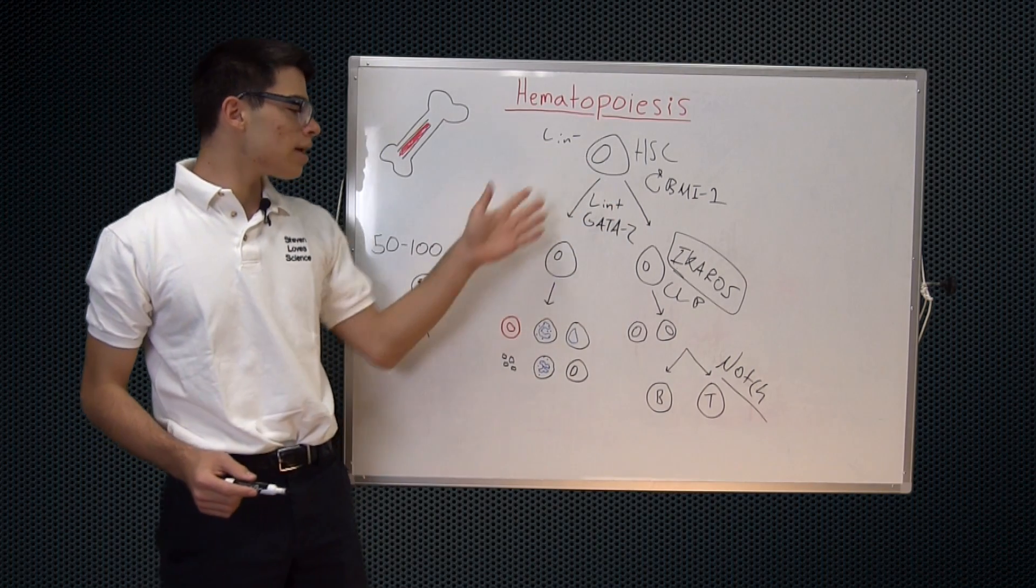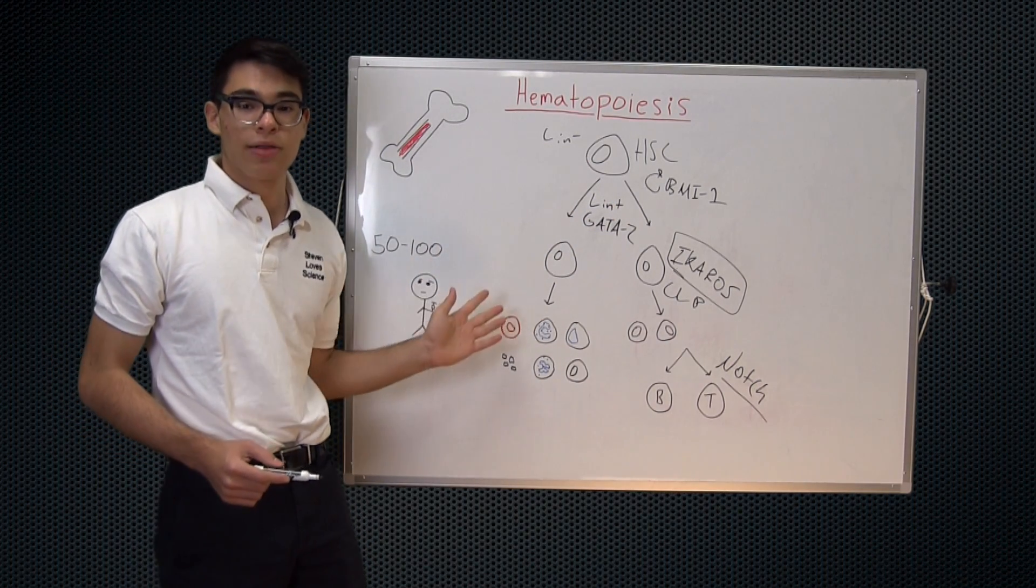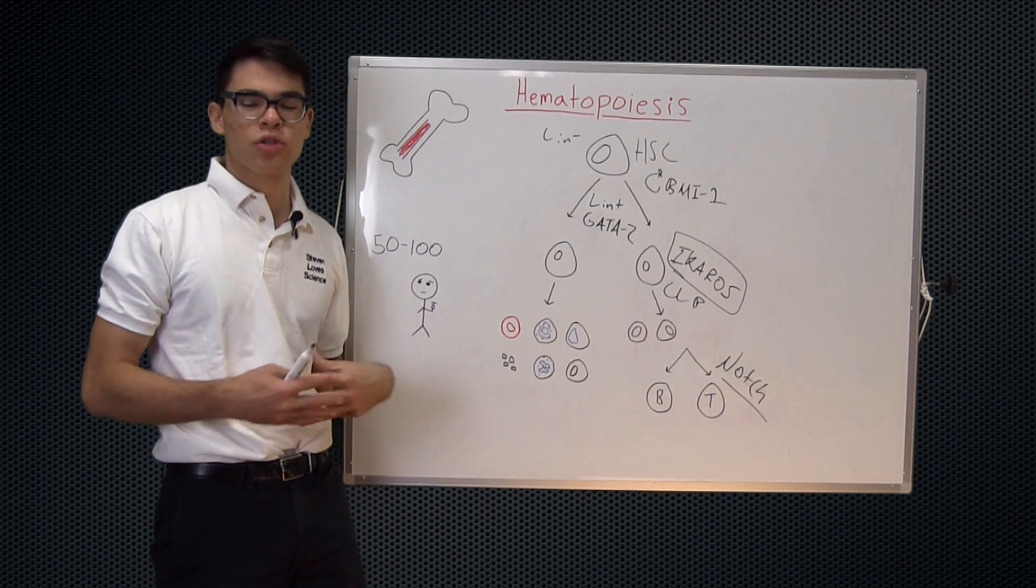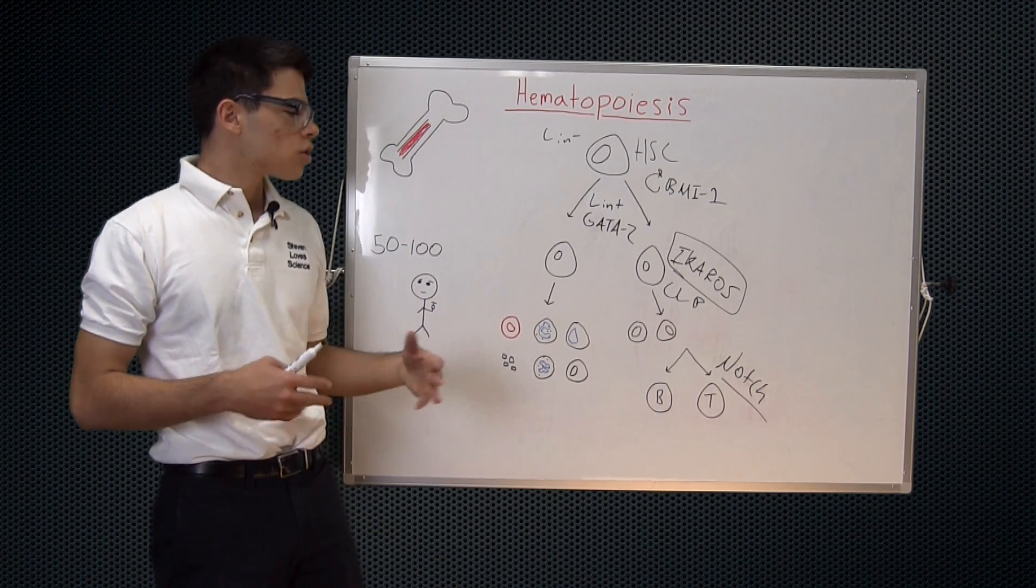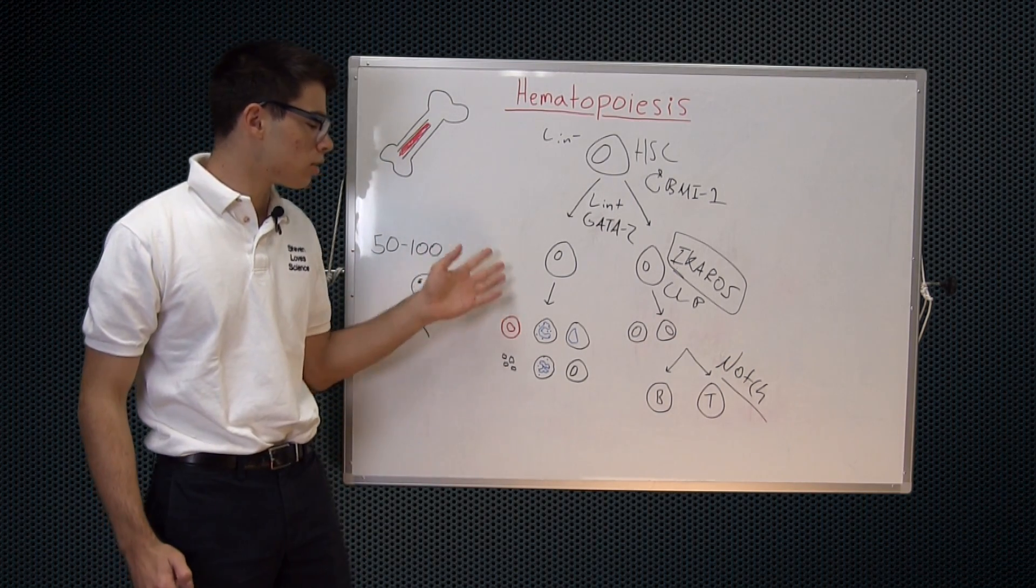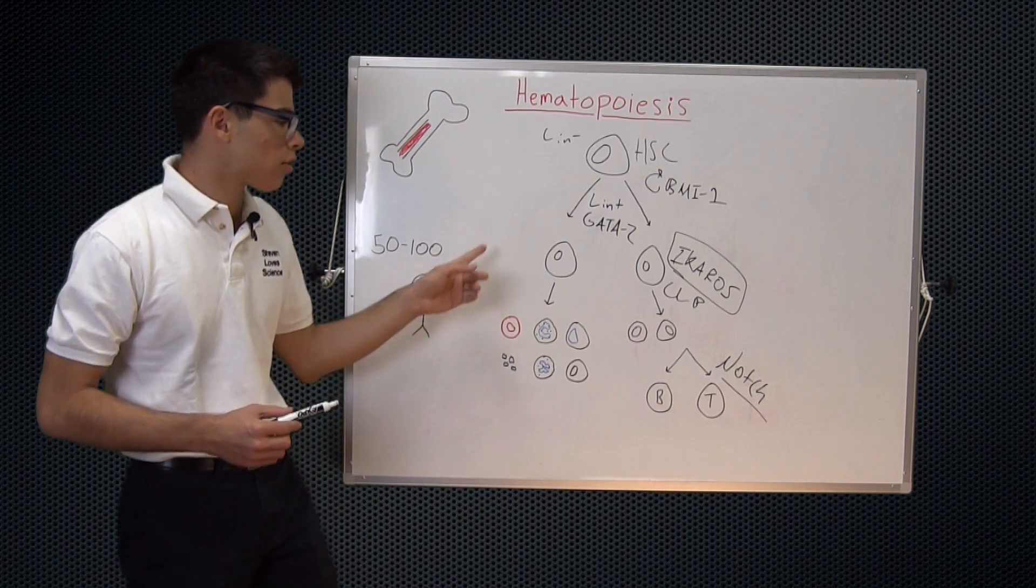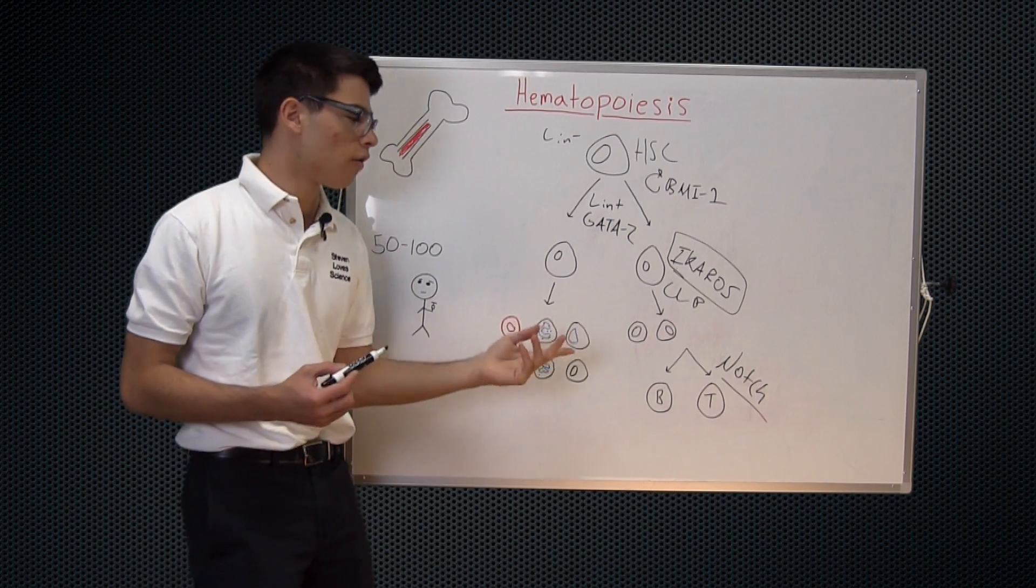So now going over here to this side, we have yet to discuss really the myeloid path. So the myeloid path is really the default path and there are many other just transcription factors involved. So I don't really want to talk about those in too much detail. So we can either go a myeloid path where we have some general transcription factors, many of them involved.